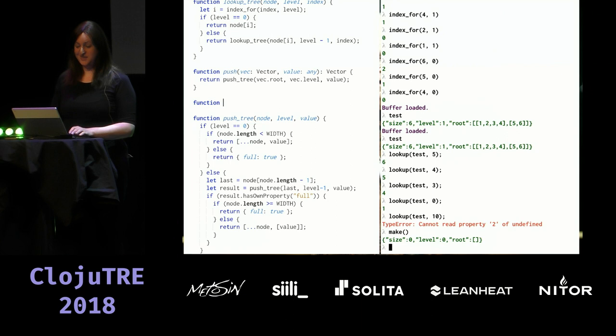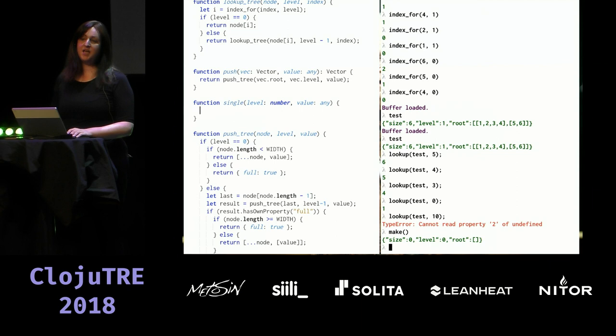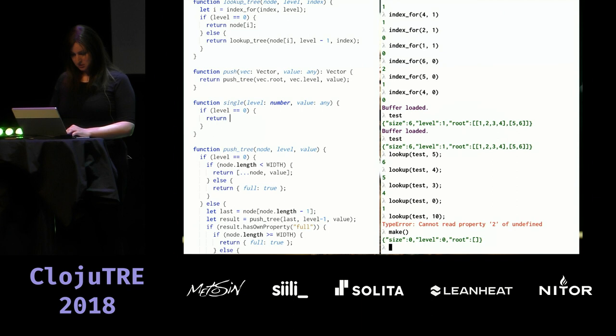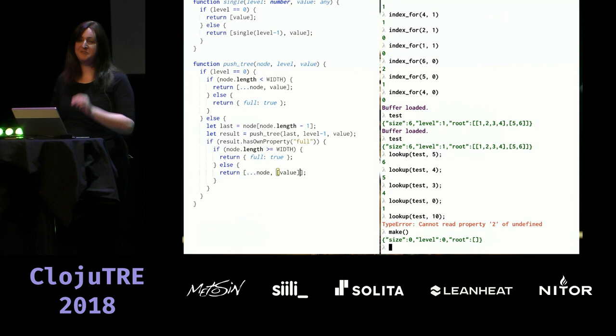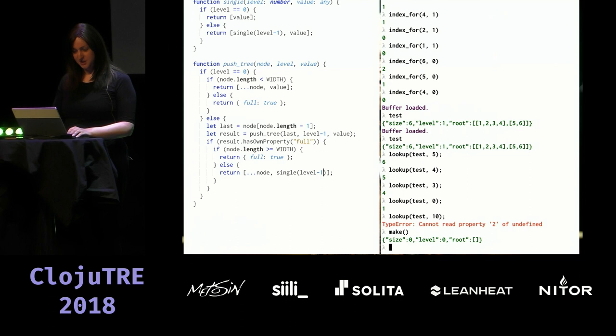We need a helper function 'single' to create a node with as many parent wrappers as needed to reach the right level. If level is zero, just return the value; otherwise, return a recursive call to single with level minus one and value. I just caught a bug in this code — apparently I never tested it with trees of height more than one.